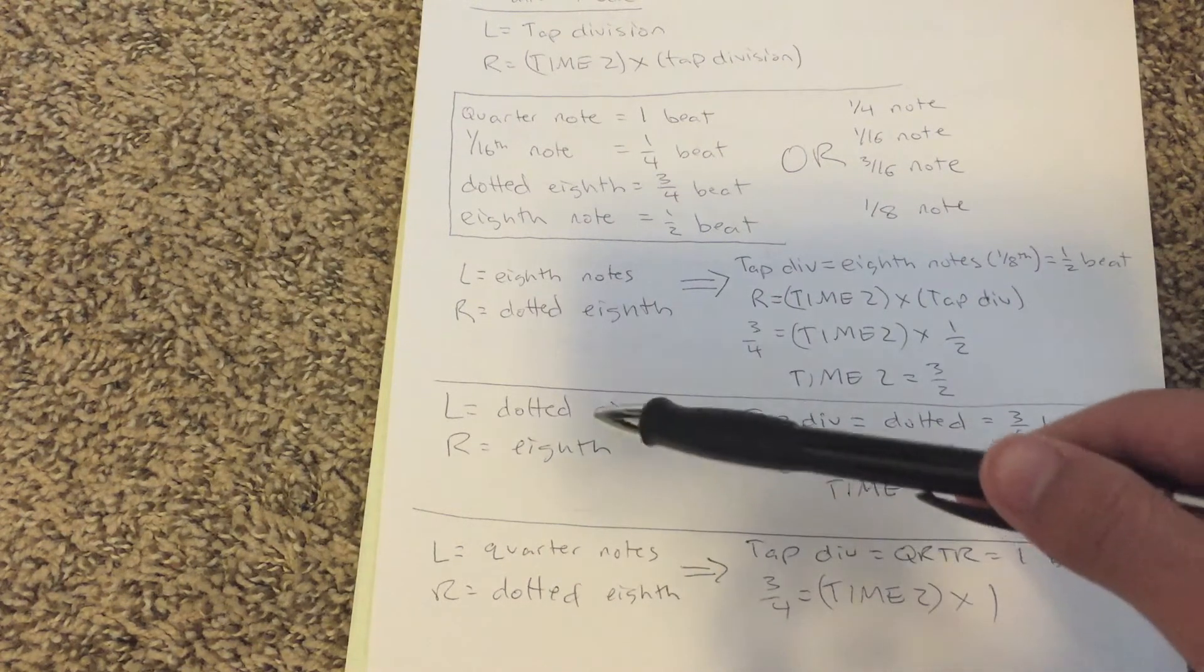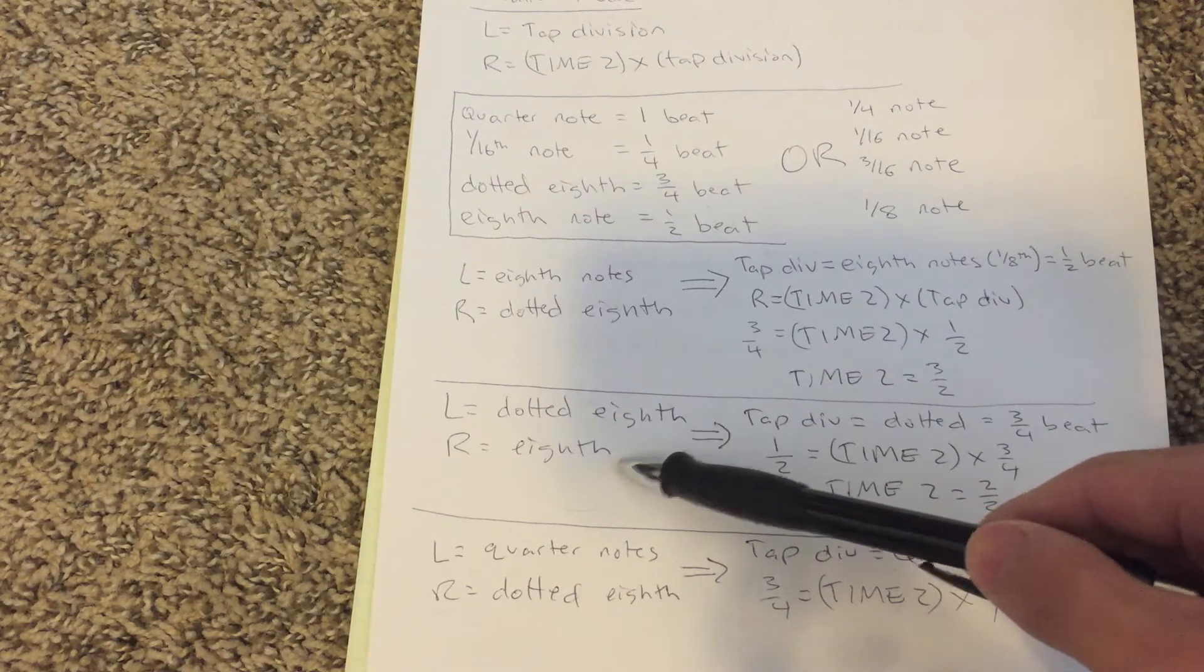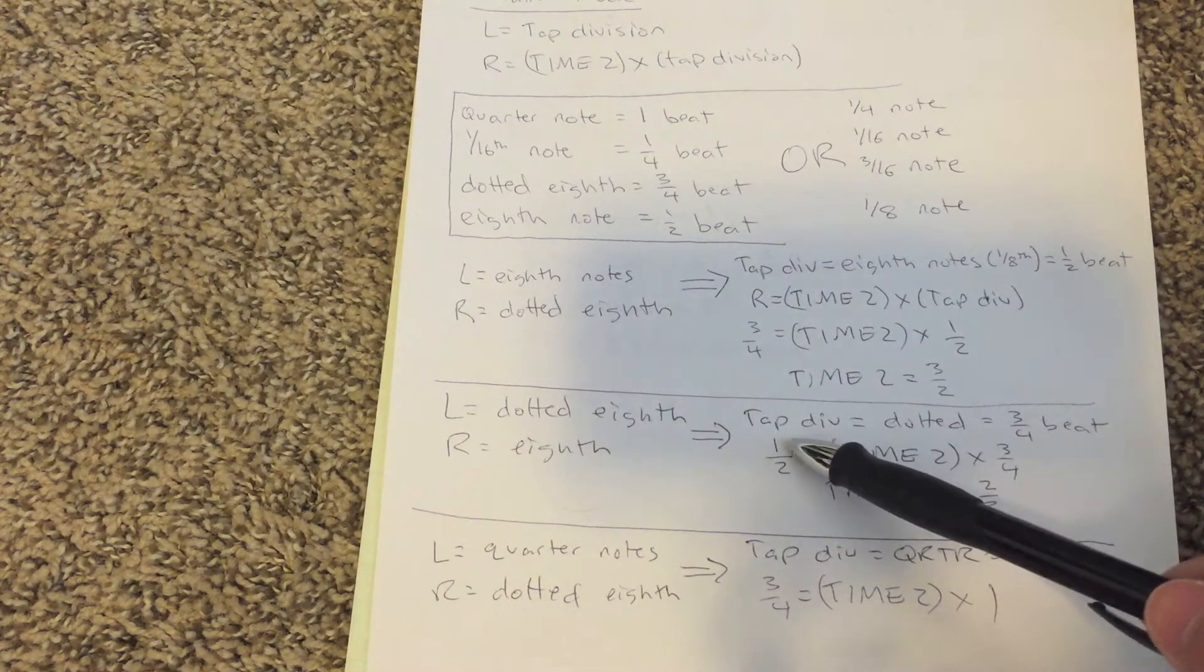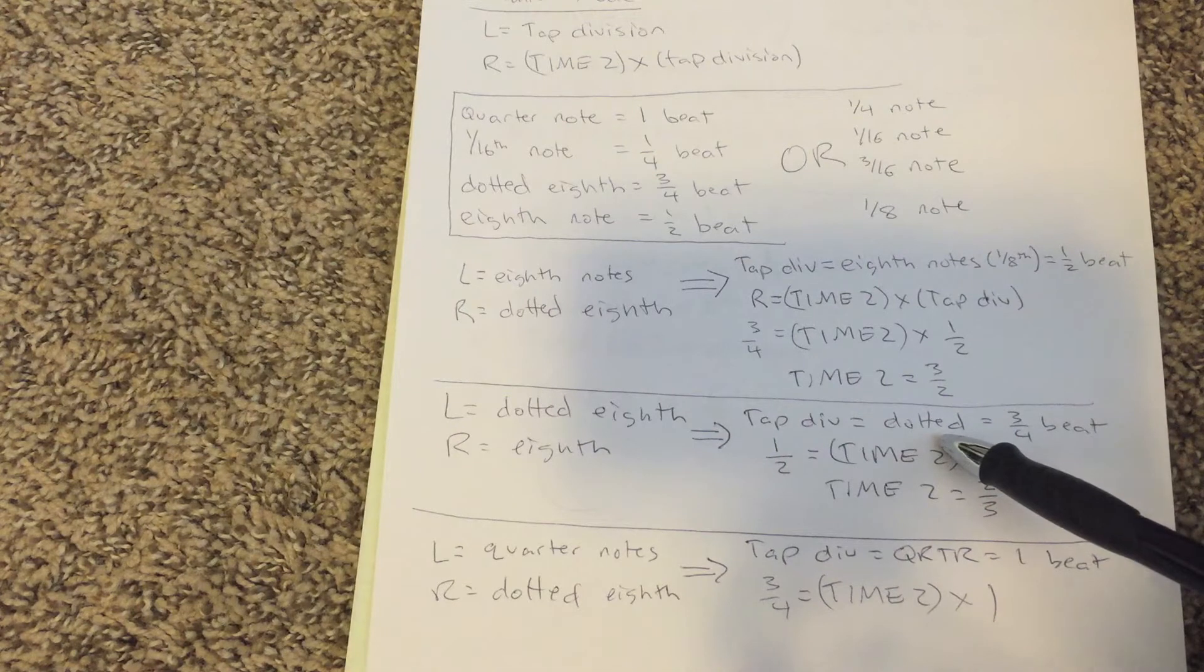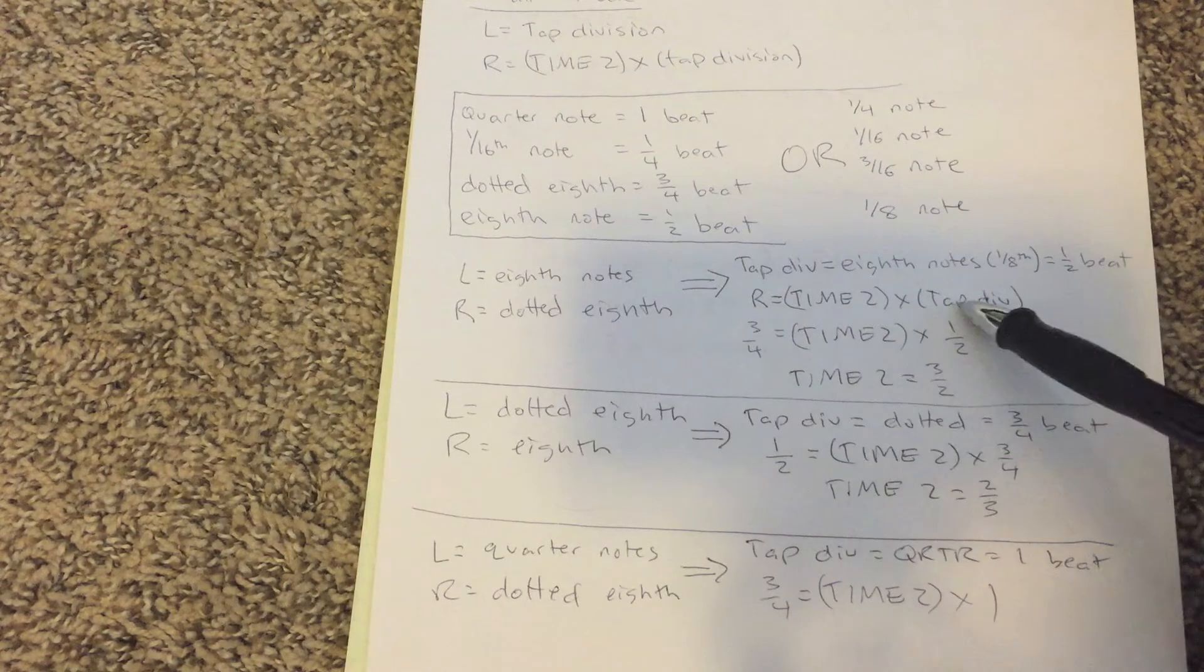Now, if you want to switch it around and have the dotted eighth note come out of the left and the right be eighth notes, same thing. Tap division, it's called dotted in the Timeline. And that's three quarters of a beat. You have this equation again.